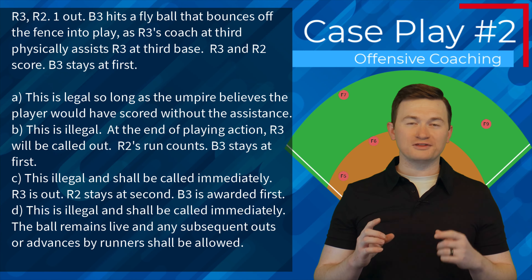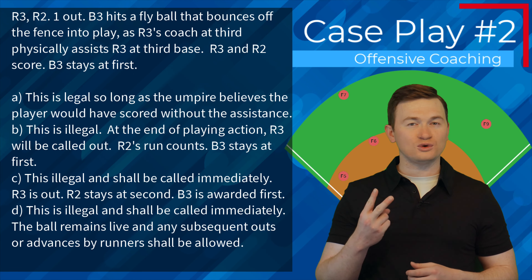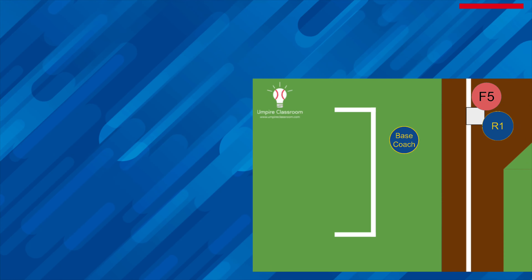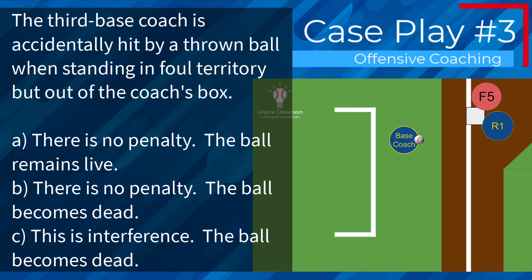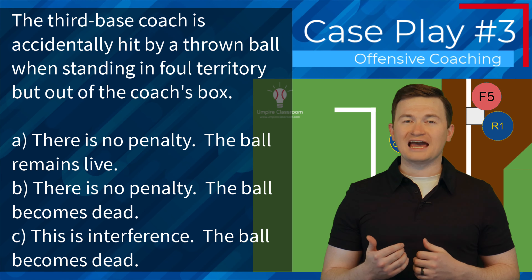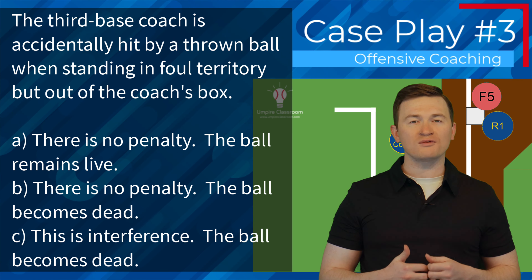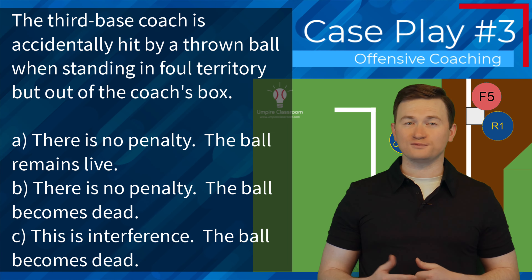It's important to remember that this is an immediate out when it occurs. This could have been important had there been two outs when this play happens. Case play number three: the third base coach is accidentally hit by a thrown ball when standing in foul territory but out of the coach's box. Is this A, there is no penalty and the ball remains live; B, there is no penalty but the ball becomes dead; or C, this is interference and the ball becomes dead? The correct answer is A — there is no penalty for a base coach accidentally being hit by a thrown ball so long as he is still standing in foul territory. Whether or not he is in the coach's box will have no effect on this play.